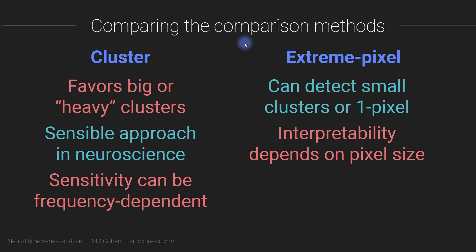Comparing the correction methods: cluster correction favors big or heavy clusters. Even real, meaningful, truly positive results can be removed if they appear in relatively small clusters. On the other hand, extreme pixel correction can detect small clusters, even clusters that are just the size of one pixel. That said, cluster correction is actually a sensible approach in neuroscience, partly because we induce spatial and spectral autocorrelation through time-frequency analysis, and also because the brain itself exhibits autocorrelation in activity over time.